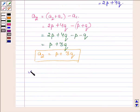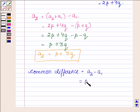We know that the common difference is found by subtracting A1 from A2. That is, P plus 3Q minus P plus Q, which equals P plus 3Q minus P minus Q, which equals 2Q.